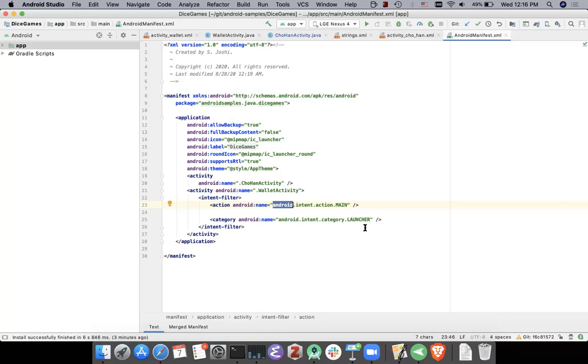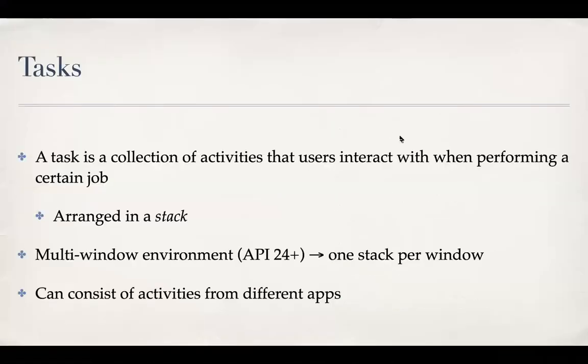It is because of this intent filter in our manifest. The wallet activity has action main and category launcher. That's why that is the one that will be launched. But then the question is, what happened the second time?